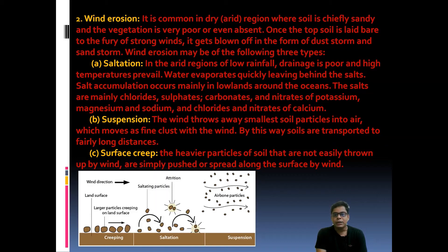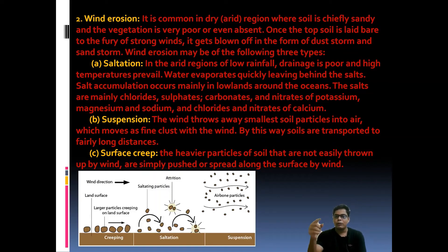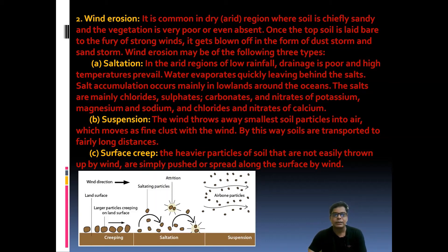Surface creep occurs when particles are heavier and cannot easily be thrown up by the wind, so they creep along the surface one by one — that is called surface creeping. In the diagram, creeping, saltation, and suspension are all presented so you can see all three types clearly.